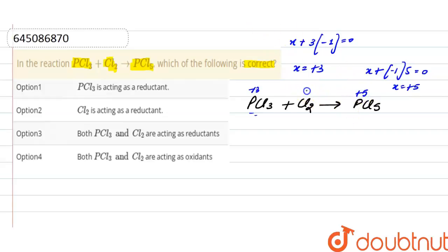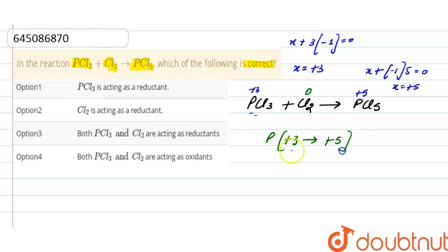In Cl₂, the oxidation number of chlorine is zero. As we can see, the oxidation number of phosphorus goes from plus three to plus five, so we can say that phosphorus oxidizes itself.